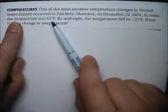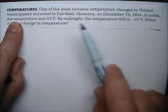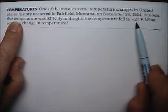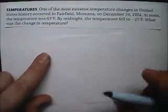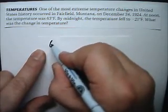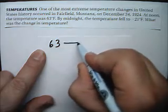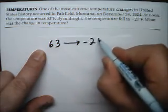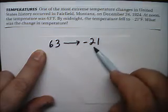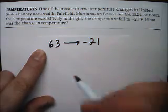So, at noon, the temperature was 63. By midnight, it fell to 21. So, just like the previous example I did, we started out at 63, then it changed to negative 21. And we took the second number, and we subtracted the first number.